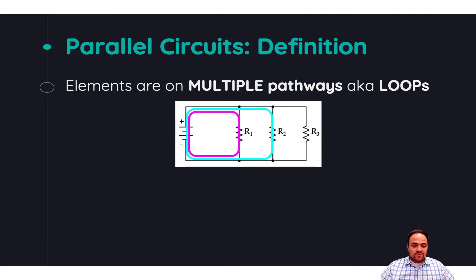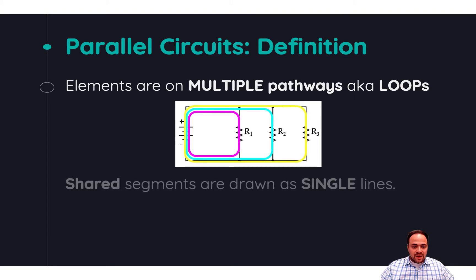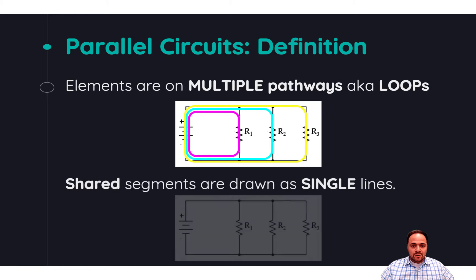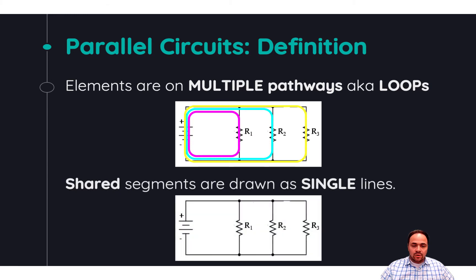When we draw these loops, we don't draw them as three separate loops. In a schematic you would see single lines representing the shared portions of the loops. We can see that yes, we have three loops, but where they overlap, that's a shared portion, and so we draw that as a single line — not all three — but all three loops are still represented.